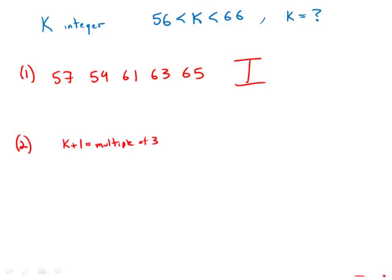So what are some multiples of 3 that are in that region? Well, 57 is a multiple of 3. Subtract 1, that would mean k would be 56, but that's not allowed, so that's not going to work.